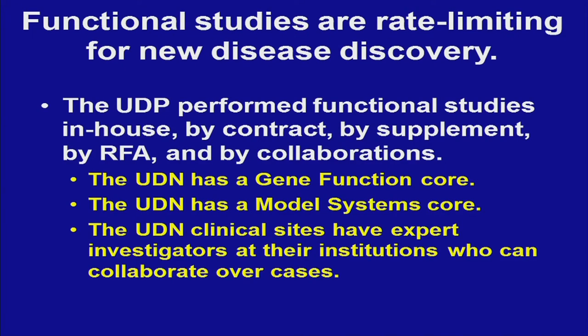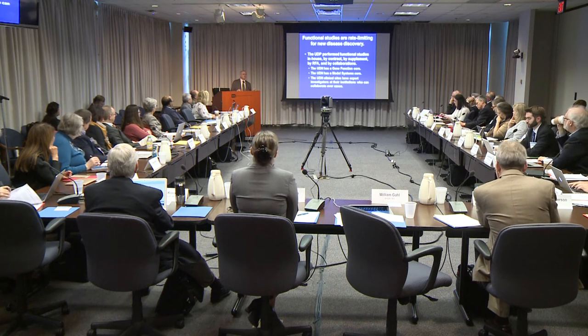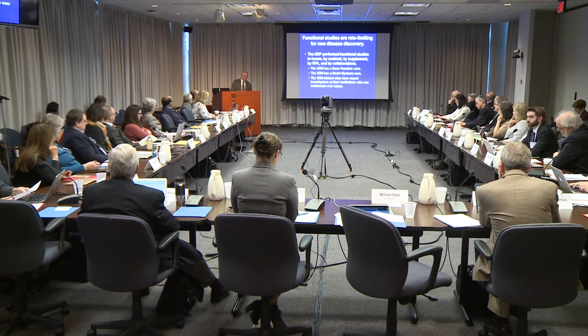Functional studies are rate-limiting, and the undiagnosed disease program has used many different ways to achieve this. We have in-house money and therefore in-house postdocs and post-bac students who work on projects from our program. We can also let contracts, and the UDN has let supplements to RFAs, to R01s, and RFAs by the R21 mechanism. We have collaborators who work on projects for no money at all — they're experts in the field who want to tie their research to a human disease for the introduction to their next R01. The UDN itself has a gene function core and a model systems core, and clinical sites have the purview to use investigators at their own institutions to pursue basic research into the variants they find.